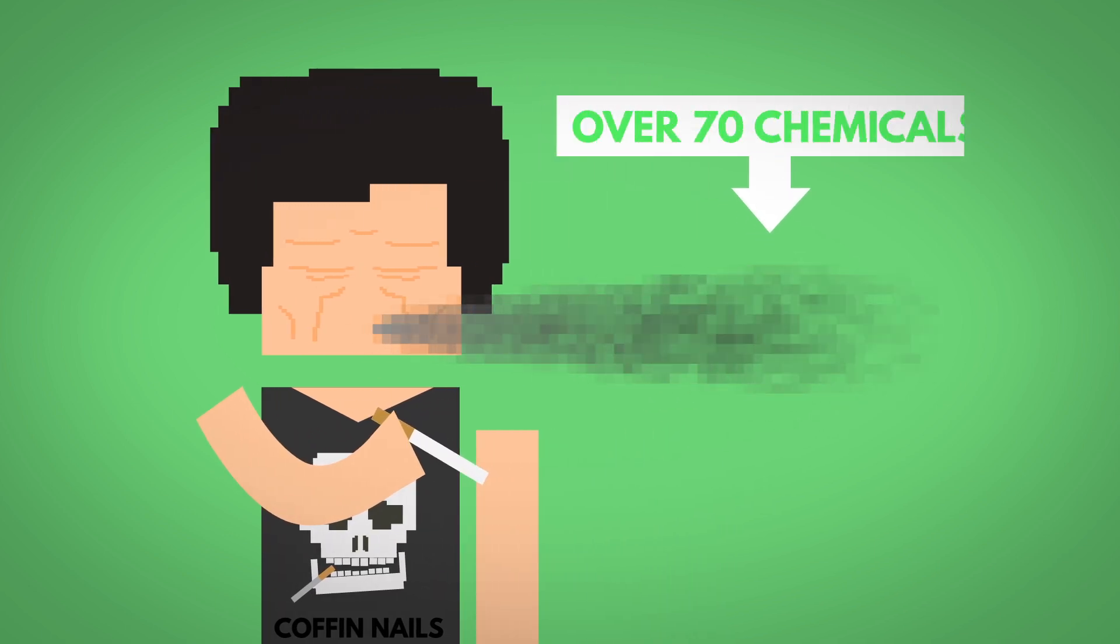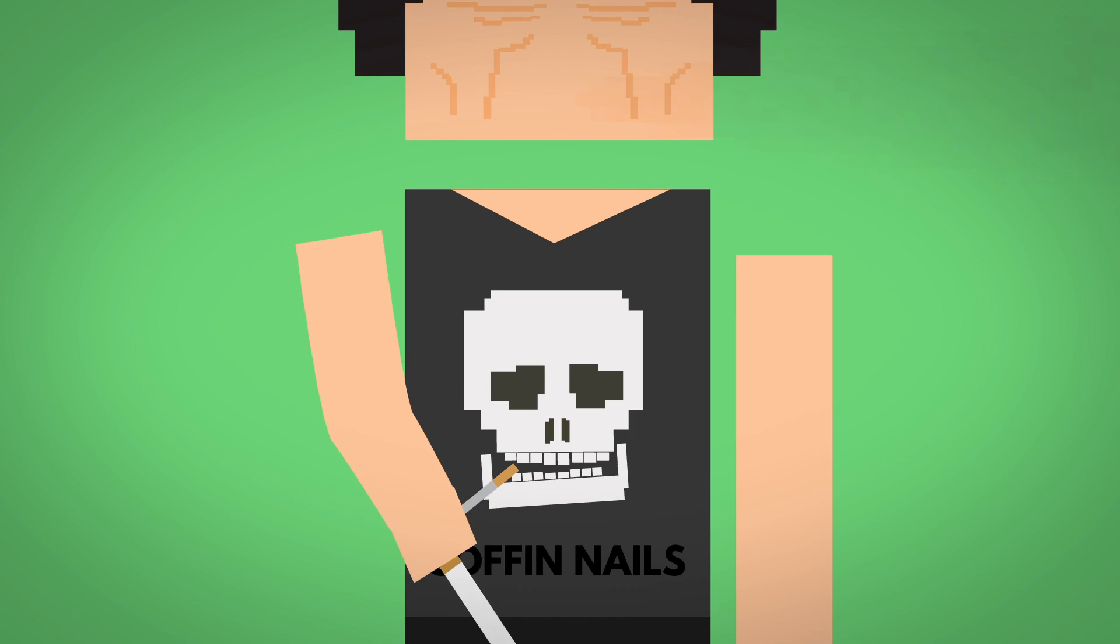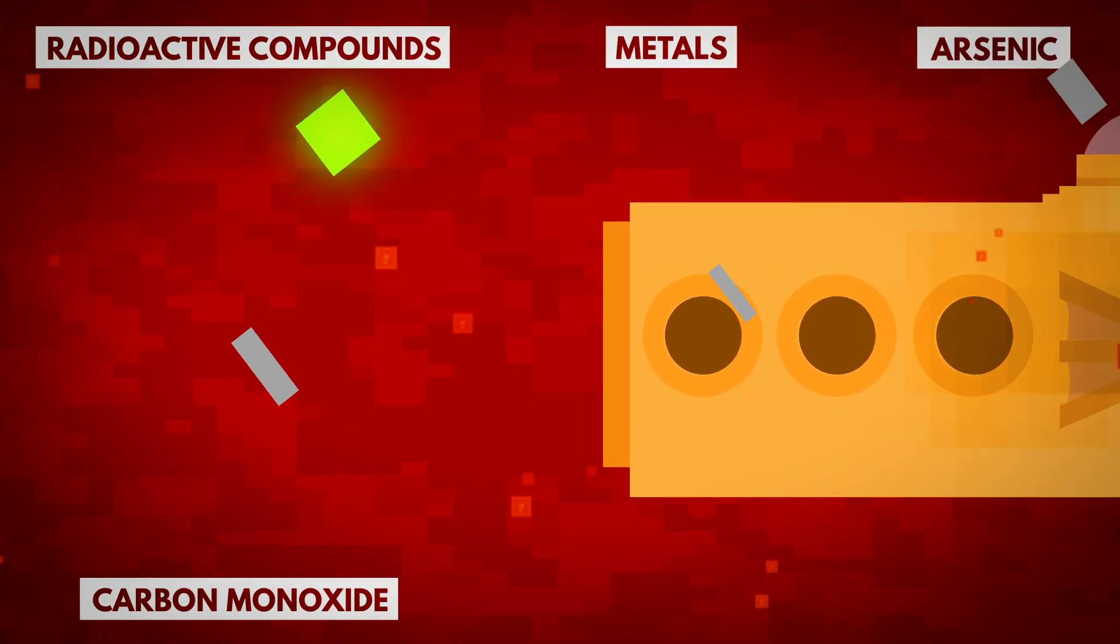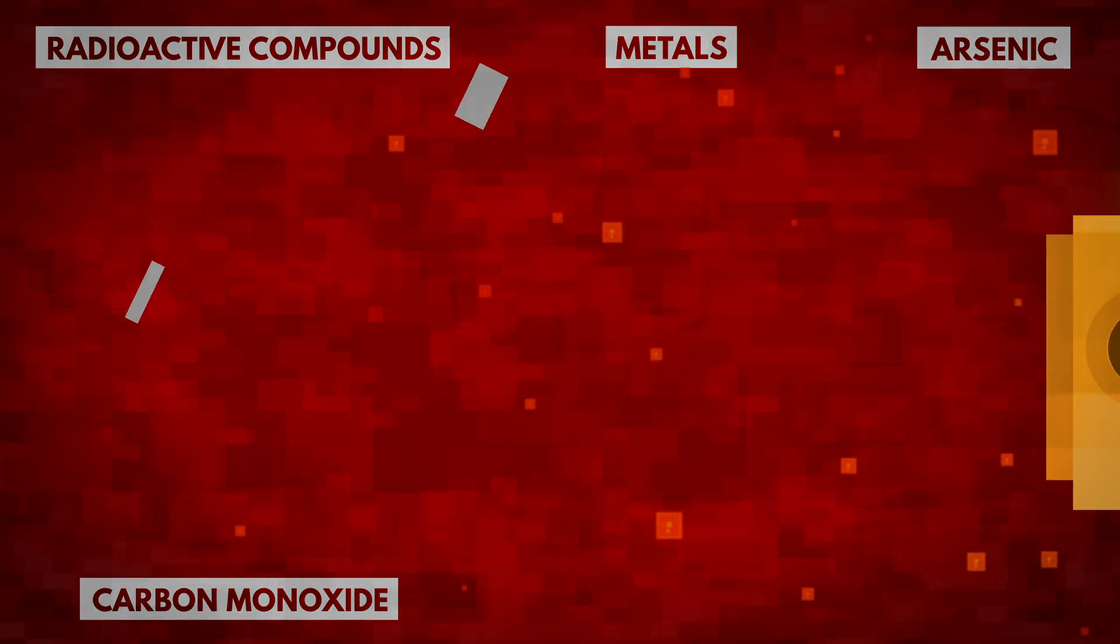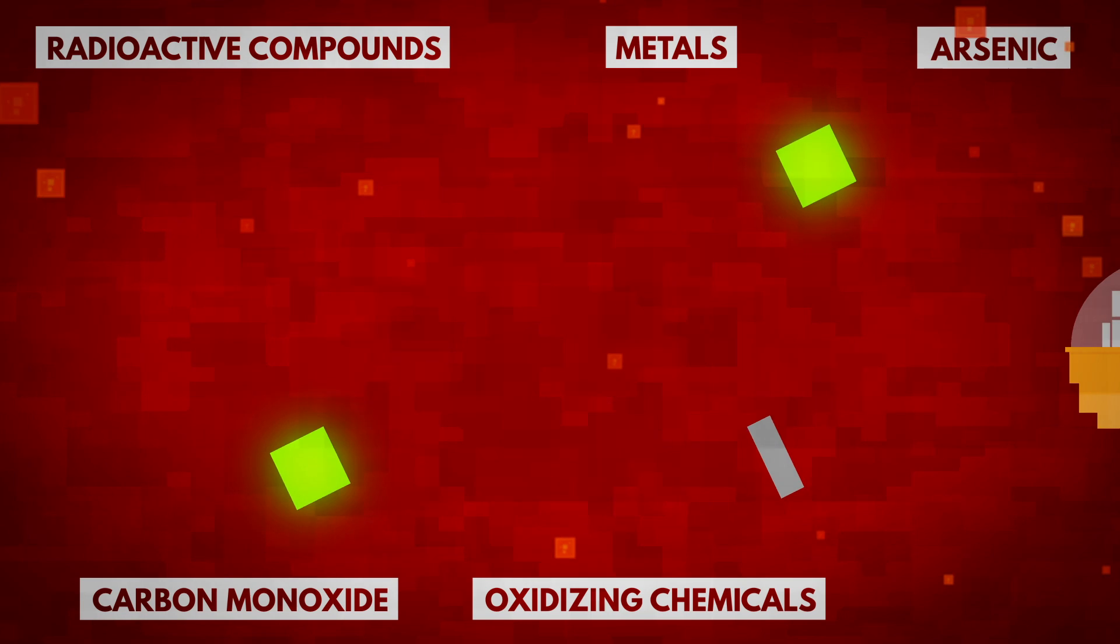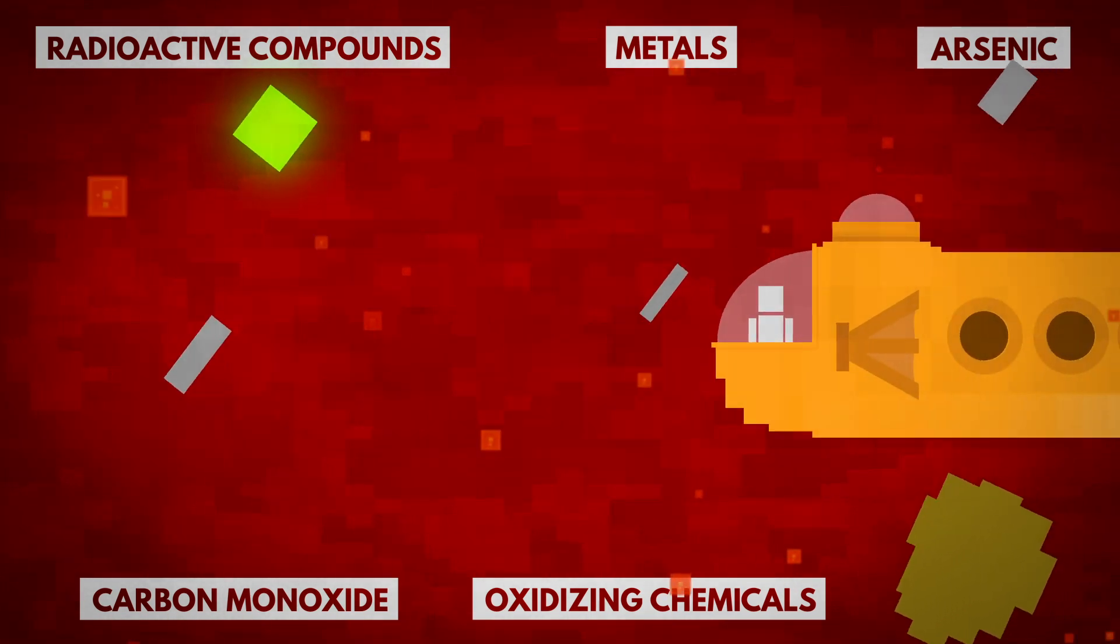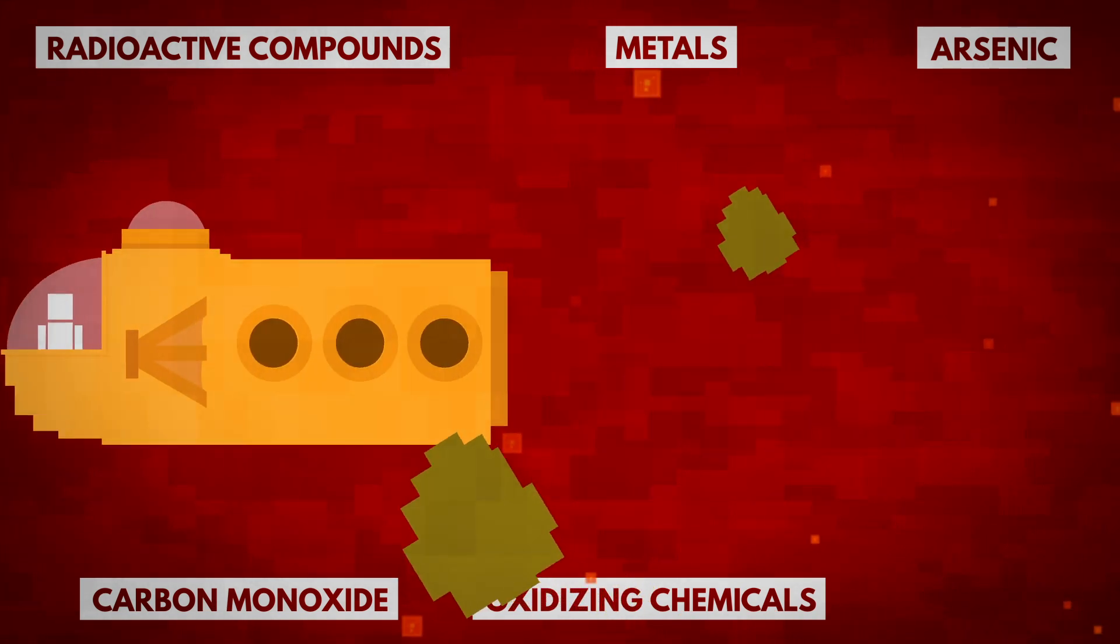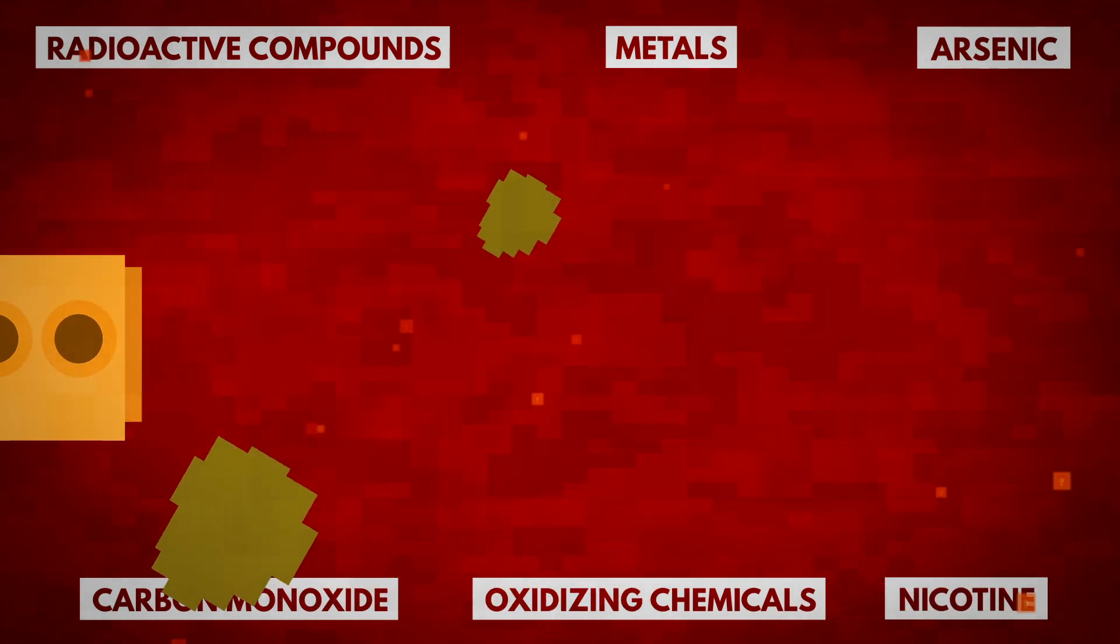Tobacco smoke contains over 70 chemicals that are known to cause cancer. This includes radioactive compounds, metals, and arsenic, as well as carbon monoxide, which is a poisonous gas that replaces the oxygen in your blood that your tissues, organs, and cells need, oxidizing chemicals that damage the heart muscles and blood vessels and lead to the buildup of fatty materials which result in heart disease and stroke, and nicotine, which is highly addictive.